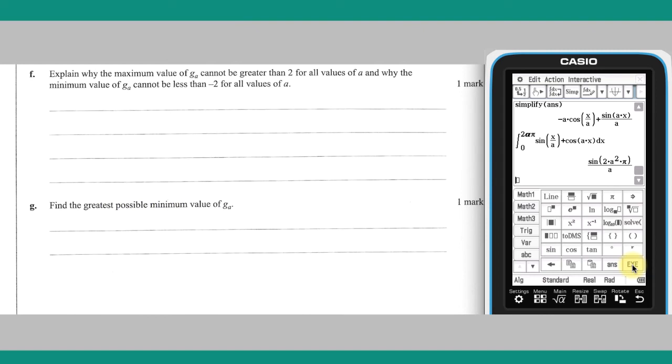Part F: As sine and cosine values are bounded between minus 1 and 1, then g of a, being the sum of sine and cosine values, is between minus 2 and 2.